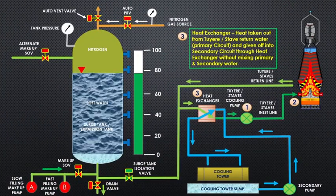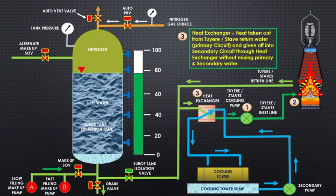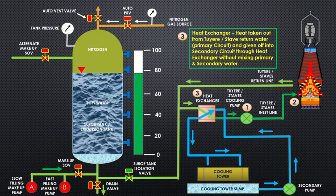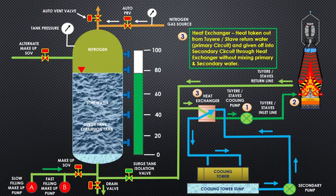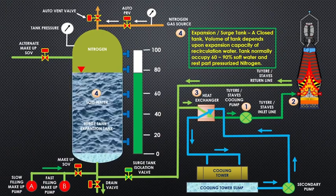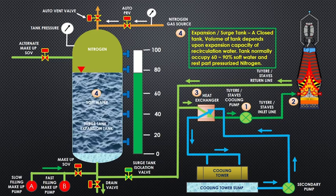Heat exchanger: heat taken out from tuyere or stave return water or primary circuit and given off into secondary circuit through heat exchanger without mixing primary and secondary water. Expansion or surge tank: a closed tank, volume of tank depends upon expansion capacity of recirculation water.